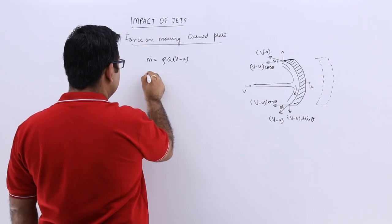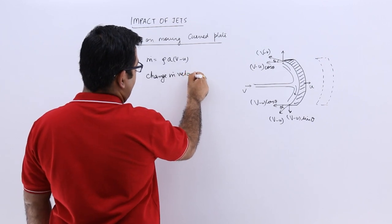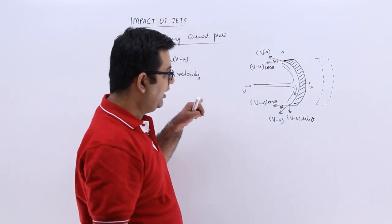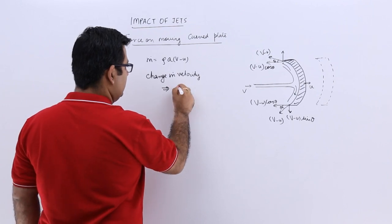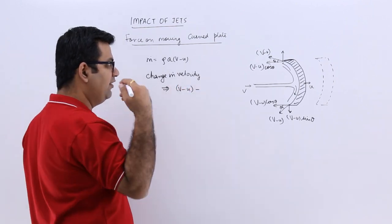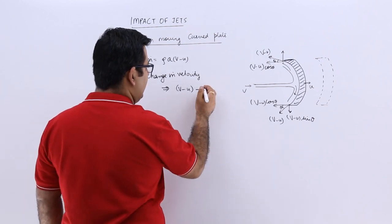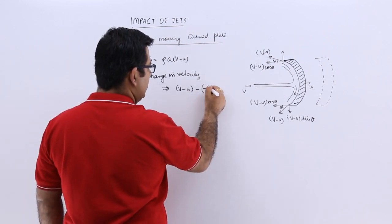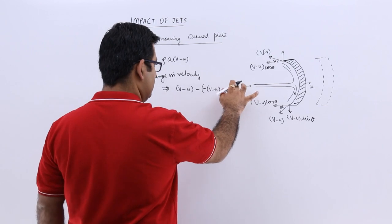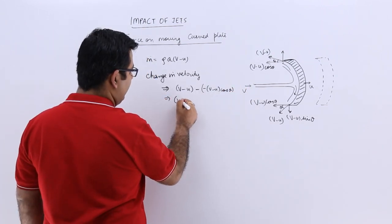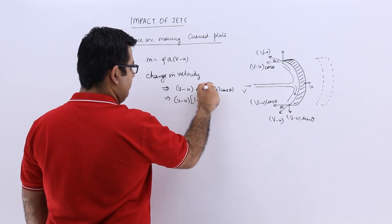Now the change in the velocity. This is the striking velocity is v minus u and the velocity with which the jet is exiting is v minus u cos theta but in the opposite direction to the incoming velocity so you will have minus of v minus u cos theta. So this would become v minus u 1 plus cos theta. This would become plus.